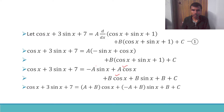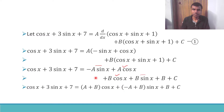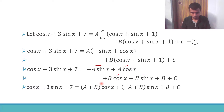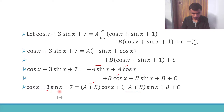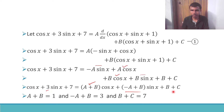Likewise, taking sin x common from the minus a sin x and plus b sin x terms, I get (minus a + b) into sin x, and then plus (b + c). So beside cos x I have (a + b) equal to 1, beside sin x I have (minus a + b) equal to 3, and b + c equal to 7.